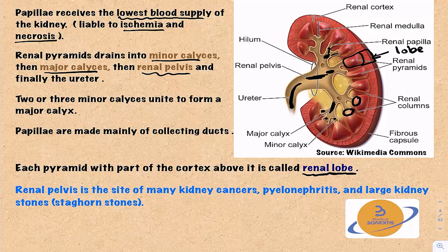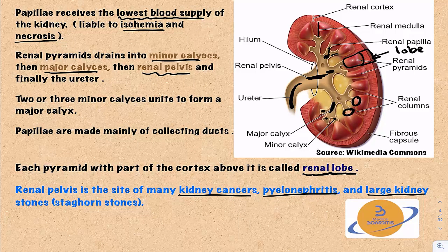The renal pelvis is the site of many kidney cancers, pyelonephritis — which is infection of the kidney — and large kidney stones, sometimes called staghorn stones.